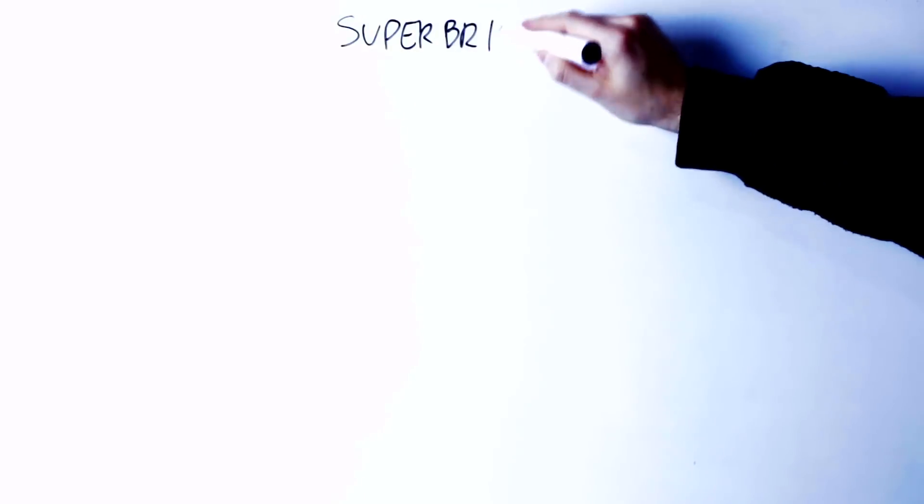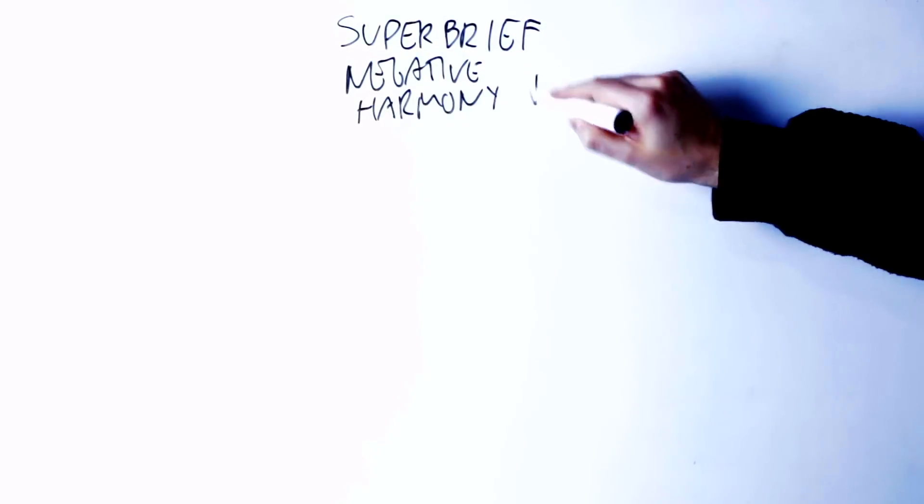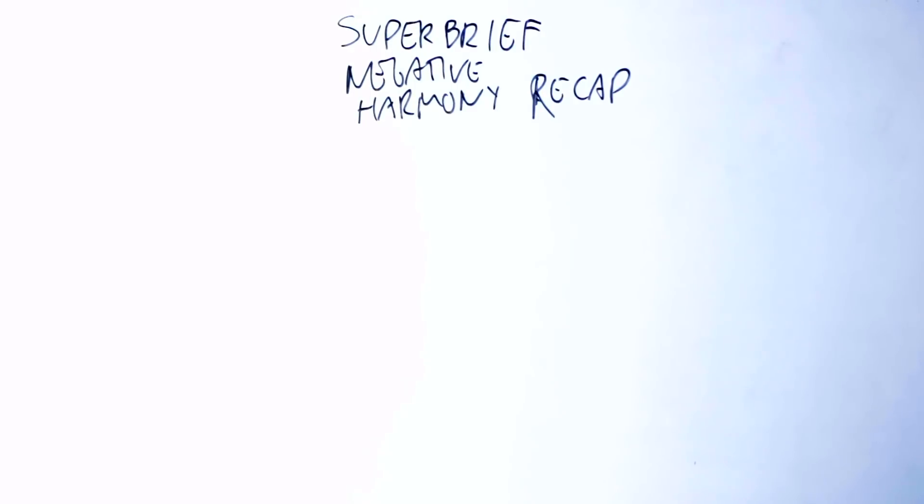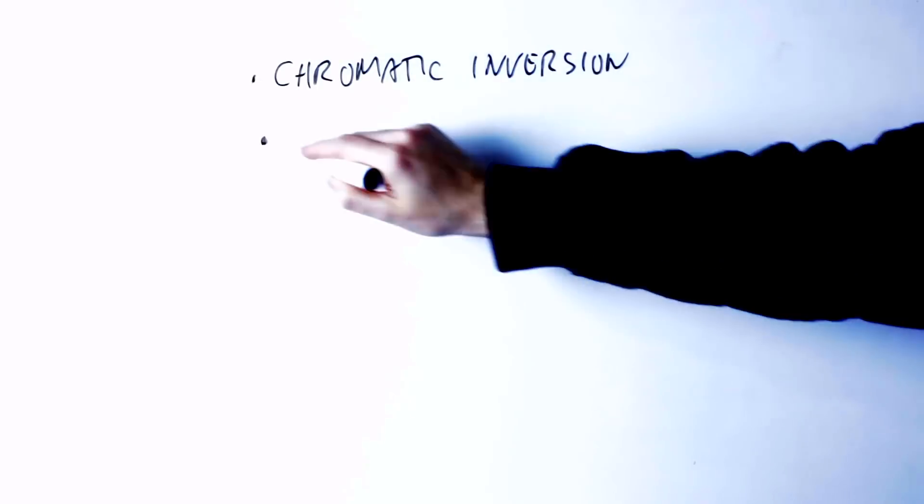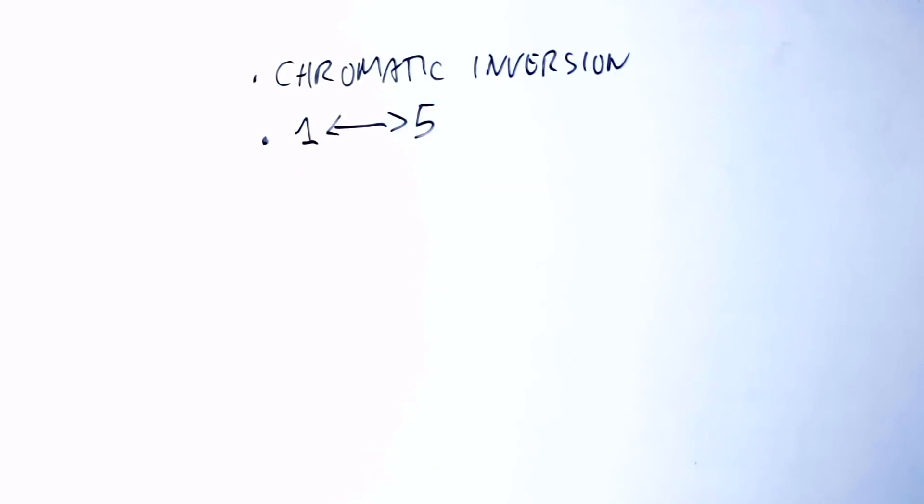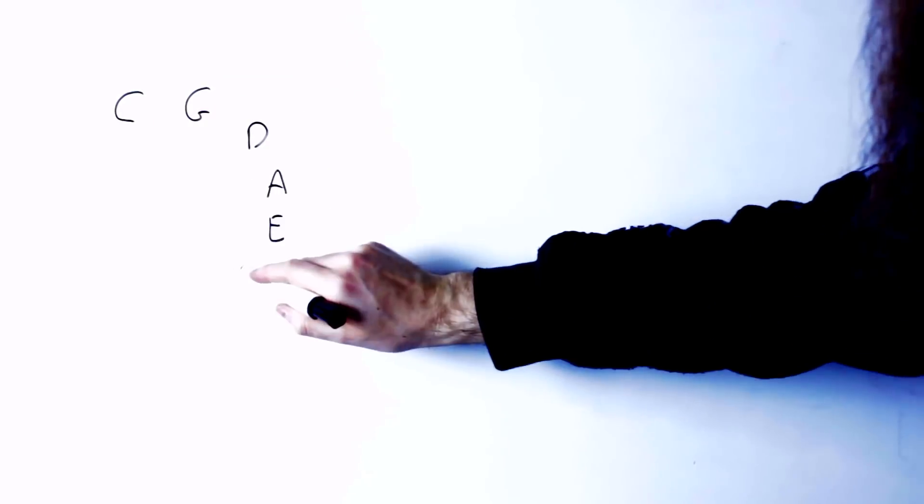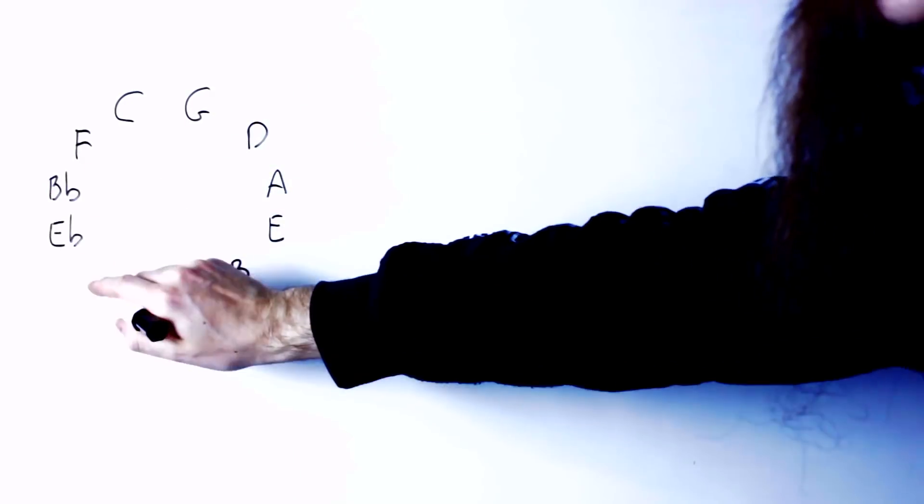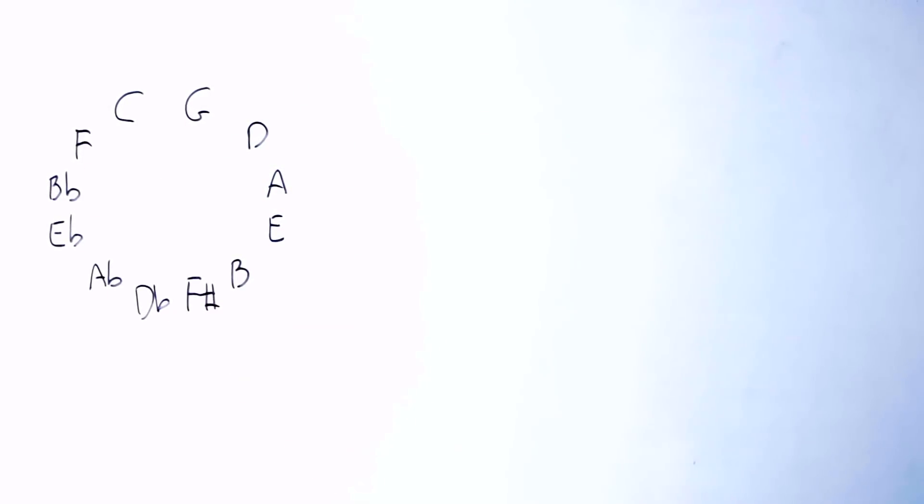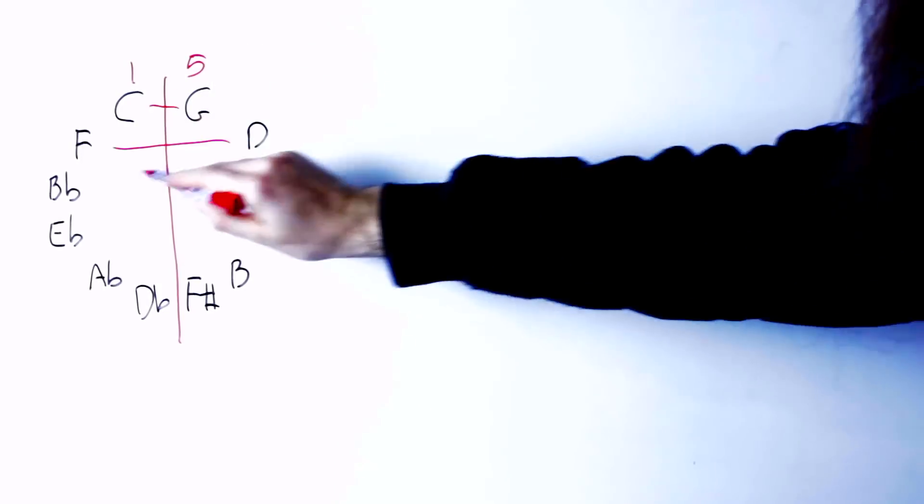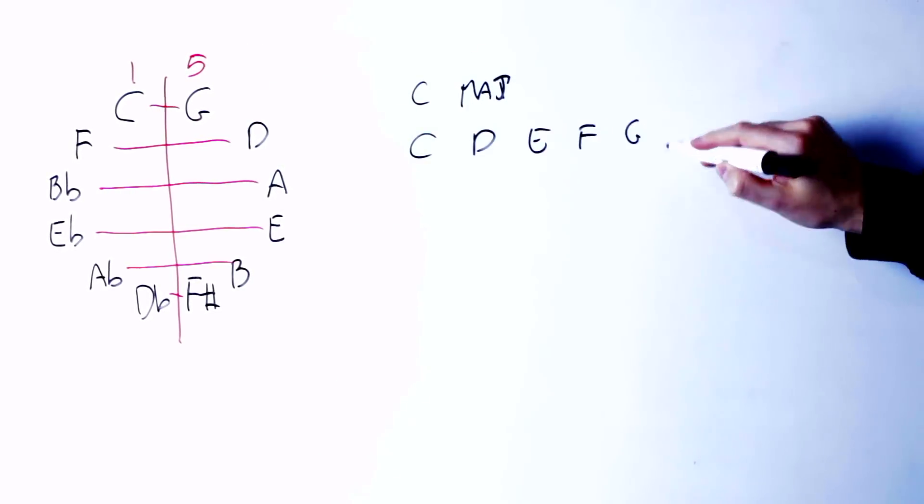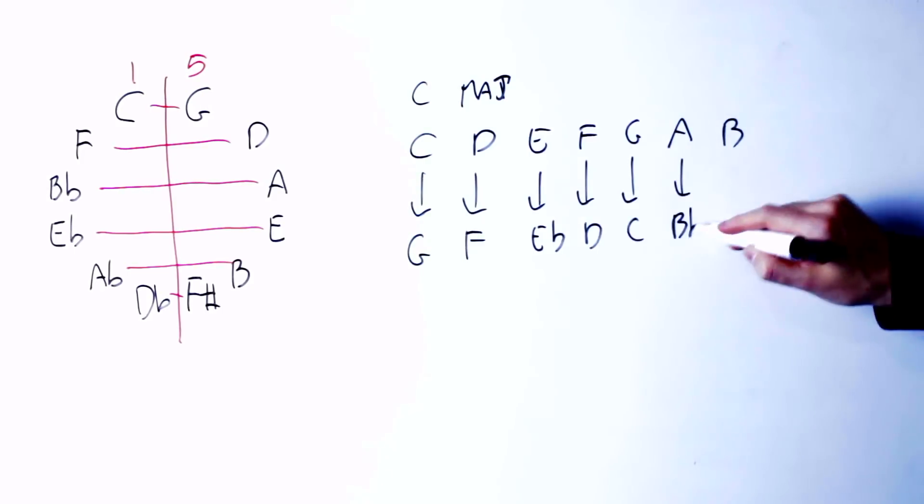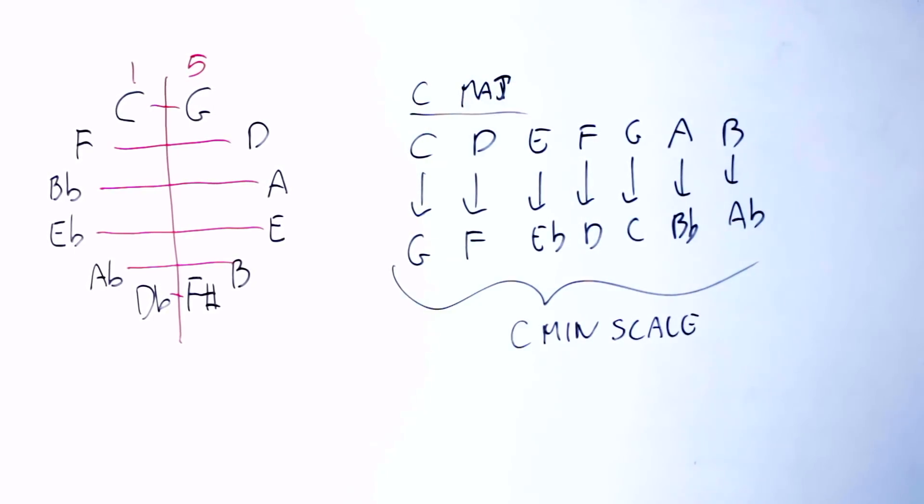Before we start, I want to just give a super brief summary of negative harmony so we are sure we are on the same page. Negative harmony is just a chromatic inversion. It exchanges the first note of the key with the fifth note of the key and vice versa. To do it, you draw the circle of fifths this way, you split the circle of fifth between the first and the fifth of the key, and you flip the notes around this way. For instance, here we see it for C major, and if I apply this to the C major scale and flip around all the notes, I find the C minor scale.